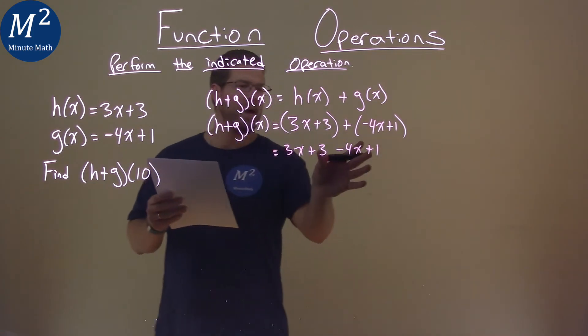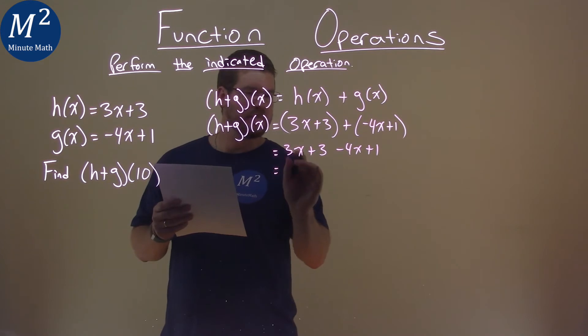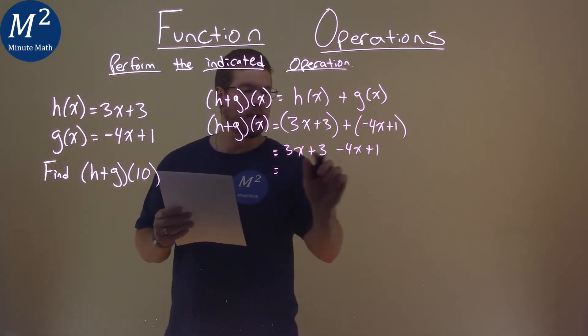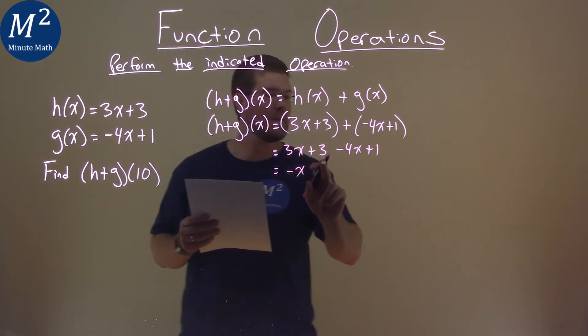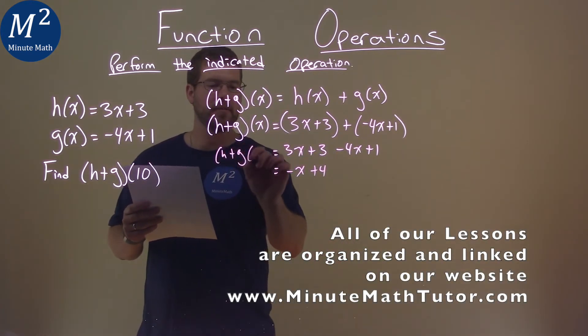Without the parentheses, we can combine them together if we want to. 3x minus 4x is negative x here, and then 3 plus 1 is 4. So again, that's (h+g)(x).